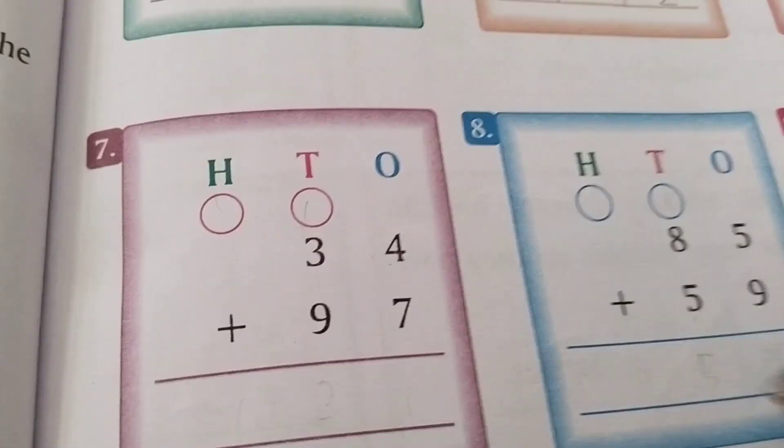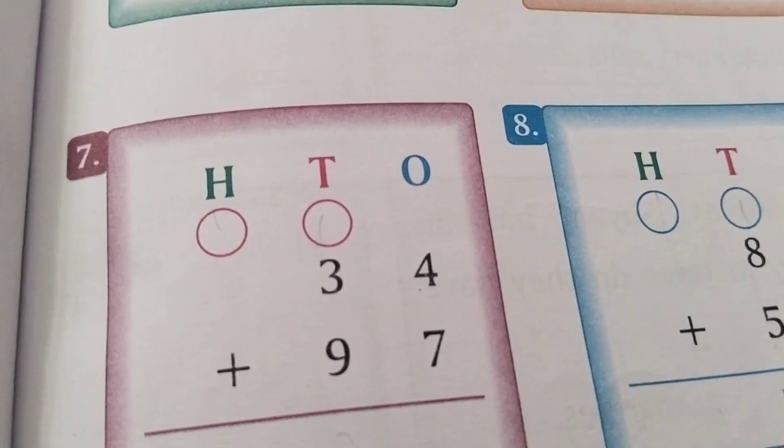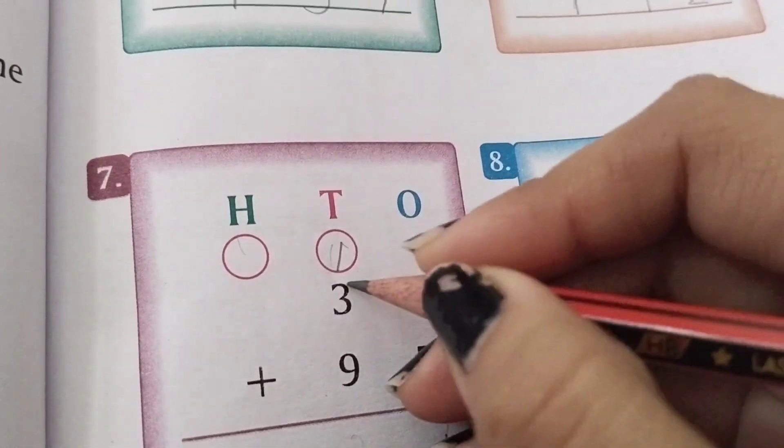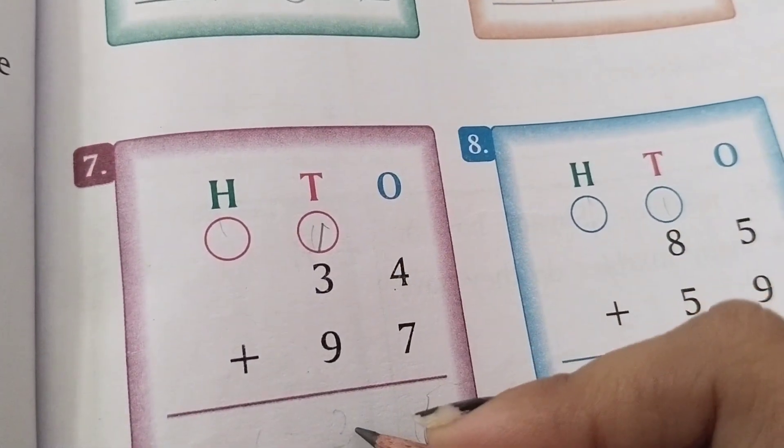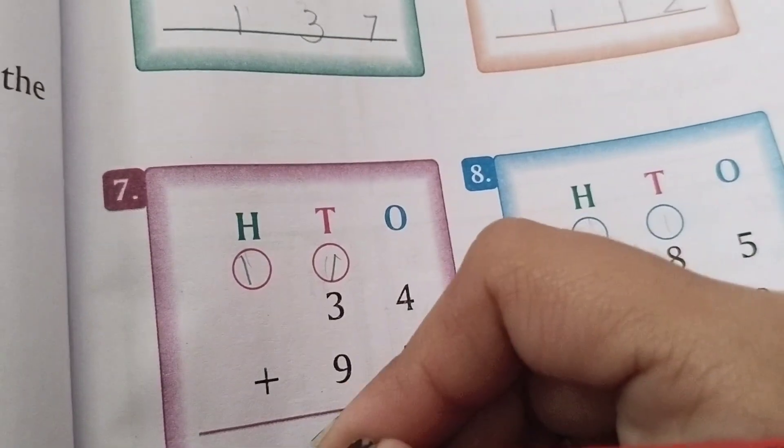Next we have 4 plus 7, which equals 11. We write 1 here and carry 1. Then in the tens column, 9 plus 3 equals 12, plus 1 equals 13. We write 3 here and 1 comes down.